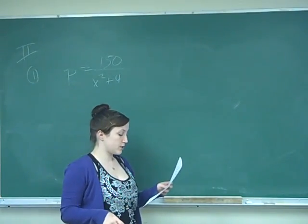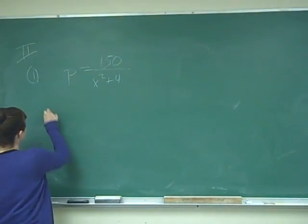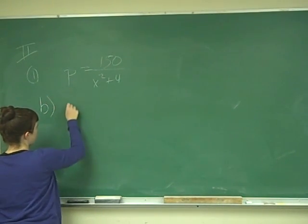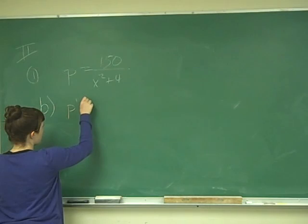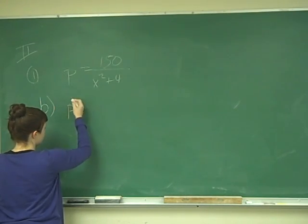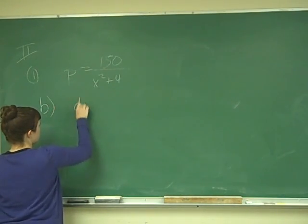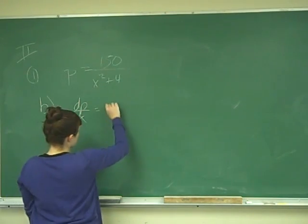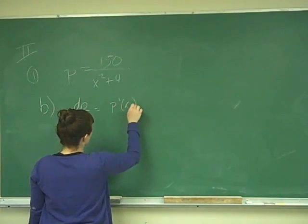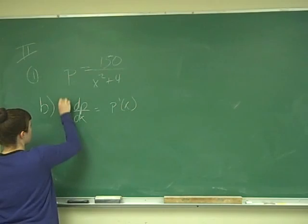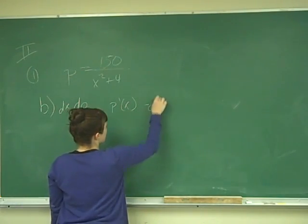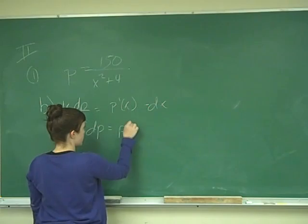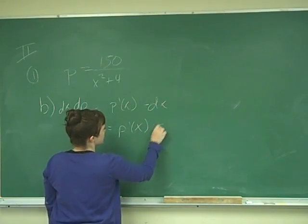Use differentials to approximate the change in the expected price of a bushel. Remember, differentials for this equation would have P prime of X, right? So we have DP over DX, which equals the derivative P prime of X. Then we multiply both sides by the change in X. We get that DP equals P prime of X times the change in X.